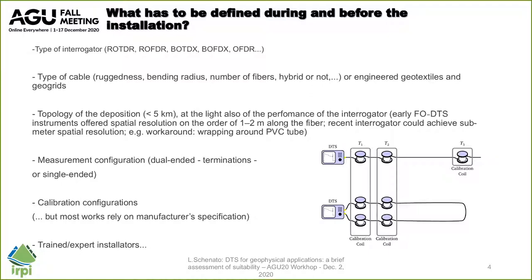There are two main options: dual-ended or single-ended scheme, depending on the accessibility of the two ends of the cable. The termination of dual fiber cables can also be important. Recently, a different termination engineering has been proposed to achieve the dual-ended configuration in a more easy way. This aspect is also related to the calibration of the system, and it is important to define this before deployment because you may need to deploy additional fiber and set temperature baths. To be honest, most of the work in the literature relies on manufacturer specifications rather than real calibration done in the field.